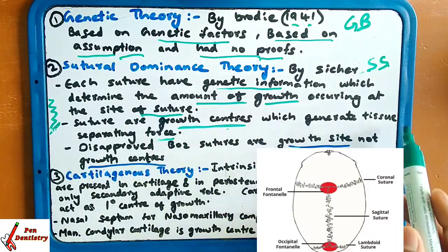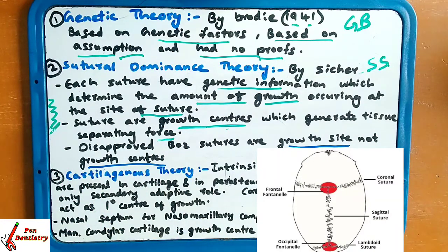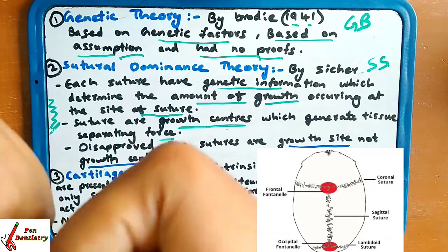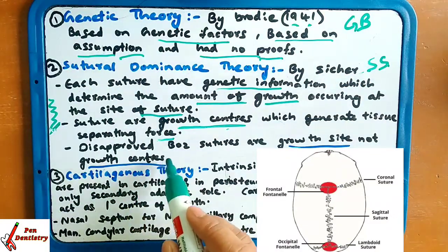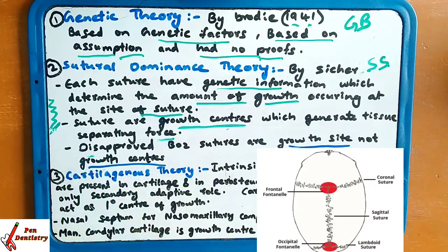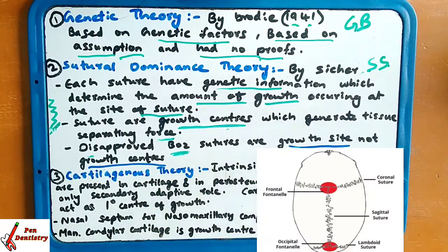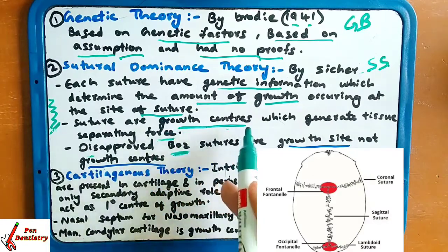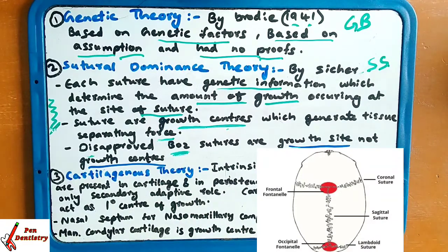Sutures generate a tissue separating force. However, this theory was disapproved. The reason was that sutures are in fact growth sites, not growth centers. So this theory was disapproved. The first one, genetic theory, had no proof so we don't consider it. Sutural theory is also not considered.